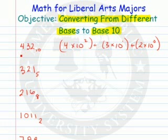So what's its value in expanded form? 4 times 10 to the second, because that's the hundredths place value. 3 times 10 to the first, because that's the tens place value. And 2 times 10 to the zero, because that's the ones place value, and 10 to the zero is 1.